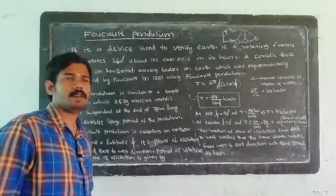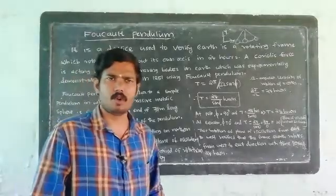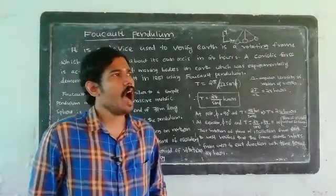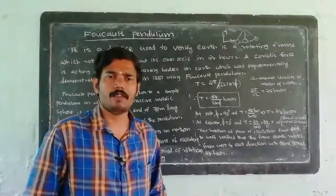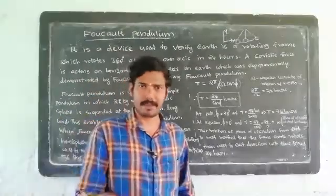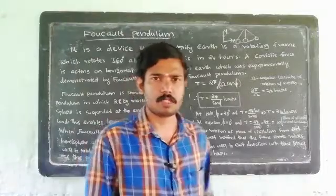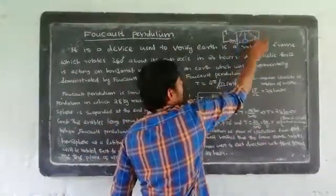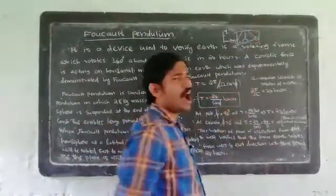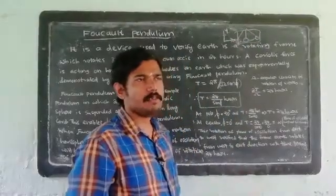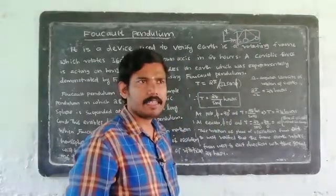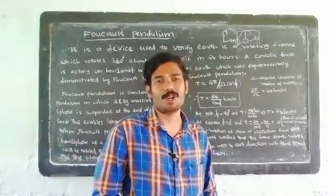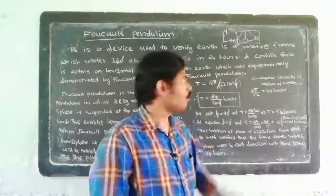We set the pendulum to oscillate in the northern hemisphere. When we set it to oscillate, the plane of oscillation is fixed in a particular plane. In the northern hemisphere, the rotation is in the east-to-west direction, so this plane of oscillation appears to rotate.